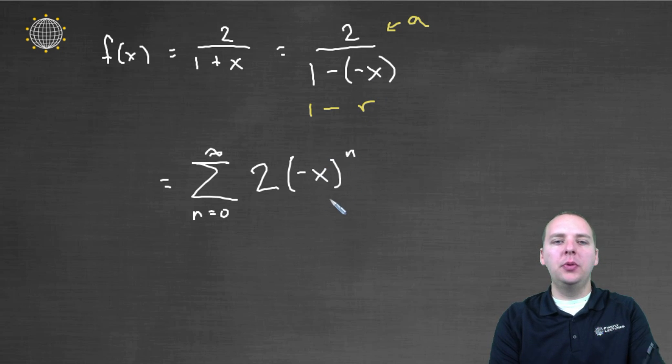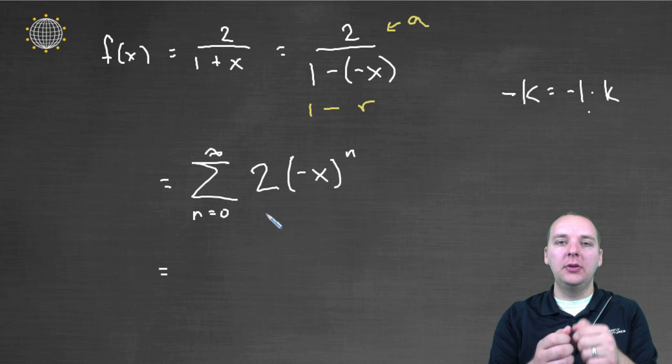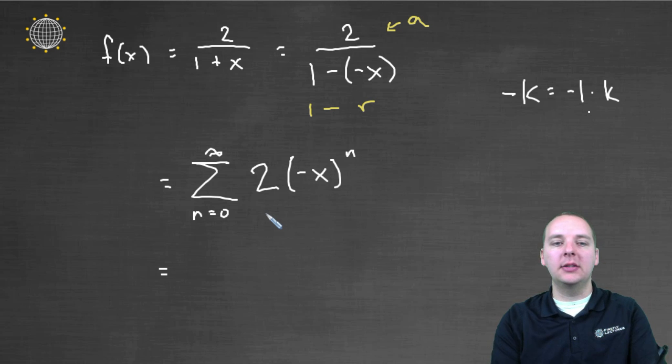And what most people will do is if you have a negative x, any negative number, you can break it apart into negative one times the positive number. And so that's what we're going to do here. We're going to separate negative x into negative one times x.